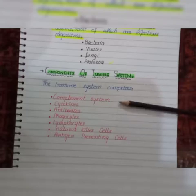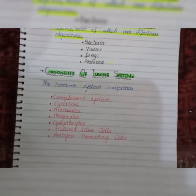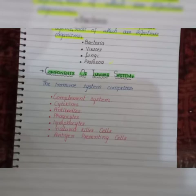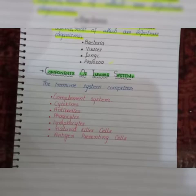First we have the complement system. These are basically proteins that participate in both specific and non-specific immune defenses, and are named from one to nine. They help in opsonization, vasodilation, chemotaxis, and also in the formation of the membrane attack complex. Second, we have the cytokines.